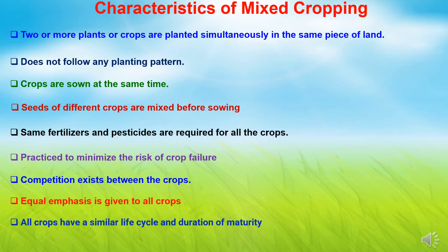Prior to sowing, the seeds of various crops are mixed together. The same fertilizers and pesticides are used for all crops, since there is no specific row pattern or separation among them — so fertilizers and pesticides common to all crops must be selected. Mixed cropping is practiced to minimize the risk of crop failure due to unfavorable climatic conditions. Because of seed mixing and no spacing pattern, there is competition between the crops, and equal emphasis is given to all. All crops have a similar life cycle and duration of maturity.